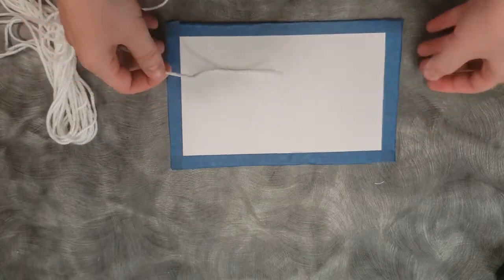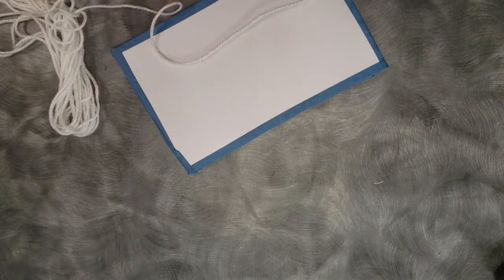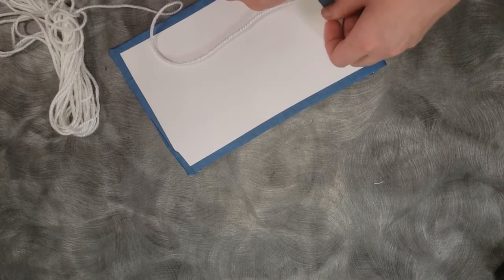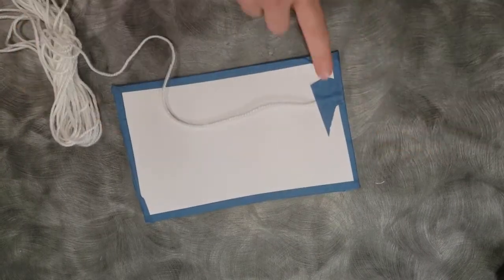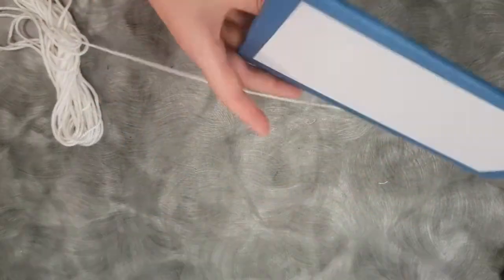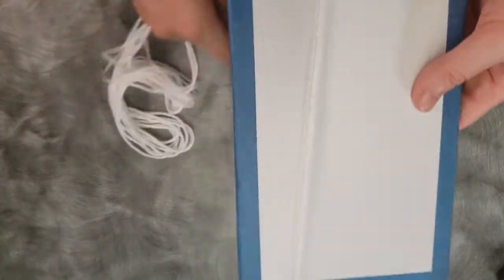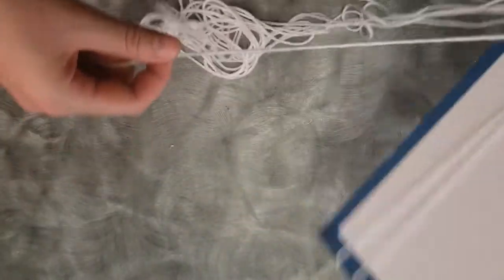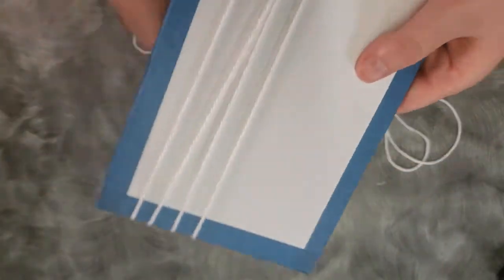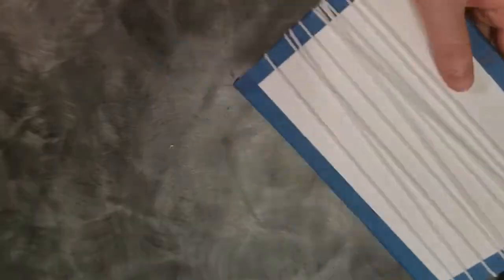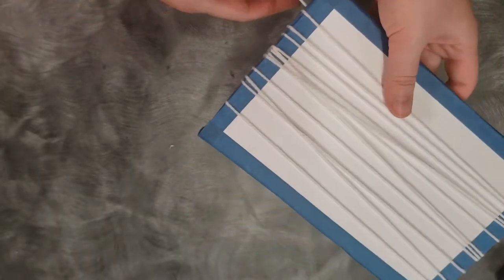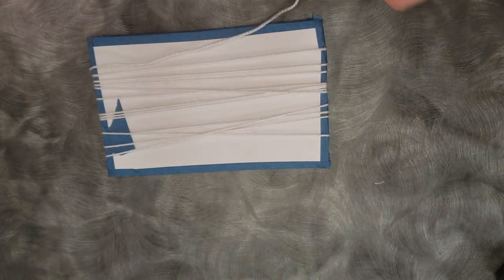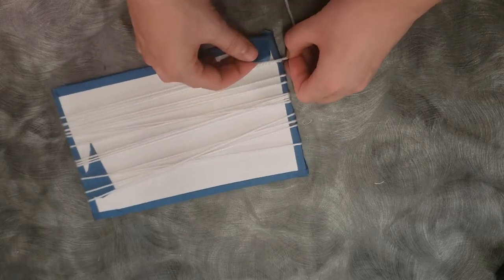First you'll want to take your yarn and attach one end of it to the back of your canvas with tape. Then you'll wrap it around the tall way, somewhere between 8, 10, 15 times. All right, I'll stop there and take this to the back over here.